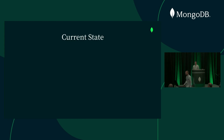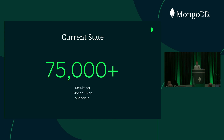I want to start off today by asking a quick question: who here has heard of a website called Shodan.io? For those who have not heard of it, Shodan is a search engine for devices like hosts and servers that are connected and reachable on the public internet. A simple search for MongoDB on Shodan, as of last week, turned up over 75,000 results on the public internet. I checked again this morning — it's closer to 70,000 now. It fluctuates a little bit every day. Today, we're going to talk about making sure your organization's cluster doesn't end up adding to this statistic.